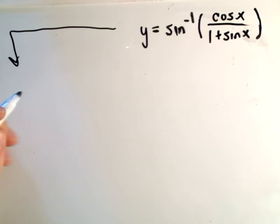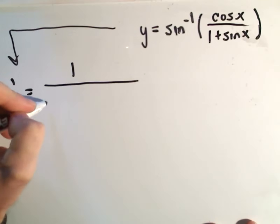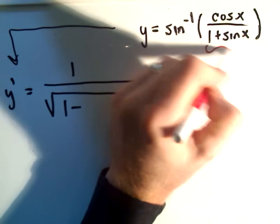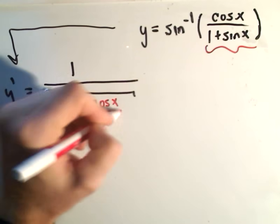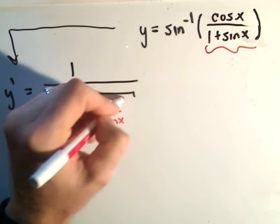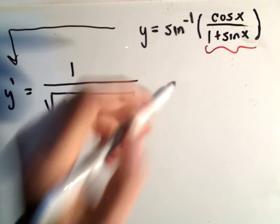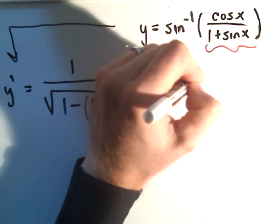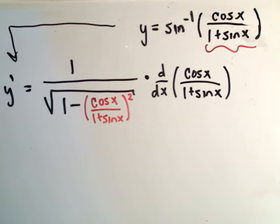You might want to jot down that formula from the beginning. The derivative of arc sine gives you basically one over the square root of one minus whatever's inside the arc sine, which is all of this stuff — so we'll get cosine x over one plus sine x, and this is all going to be squared. Then we actually have to multiply that by the derivative of the inside stuff, cosine x over one plus sine x, using the chain rule.